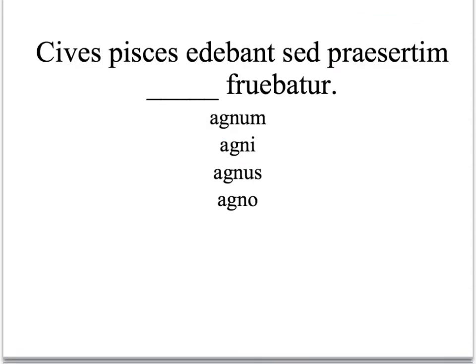Here's another example. Can you find the special verb that takes an ablative object? If you said fruibatur, you're correct — that's one of our PUFF words. And the ablative object would be agno.